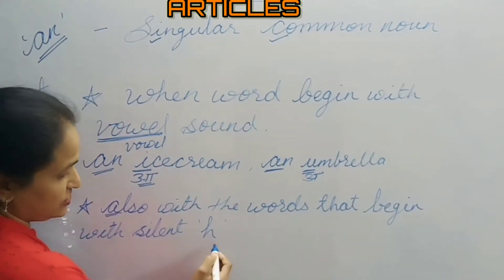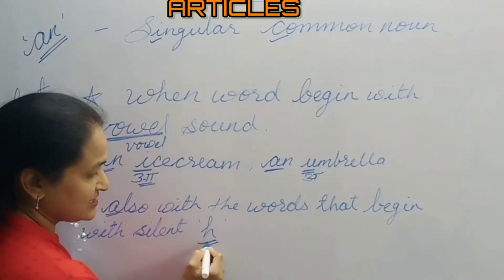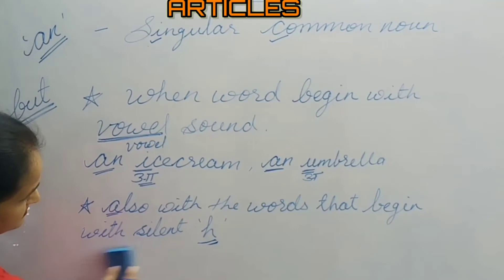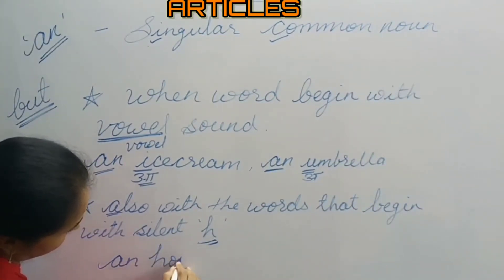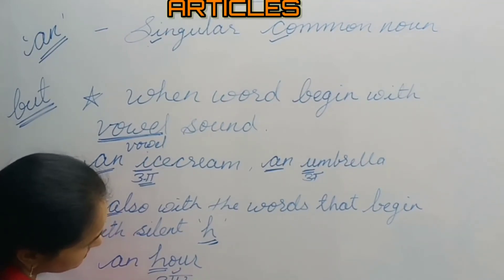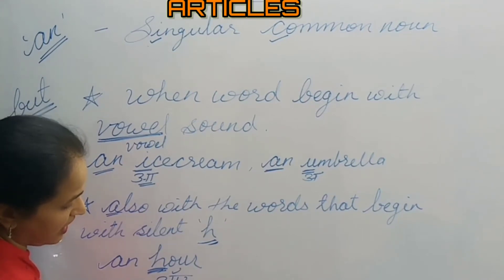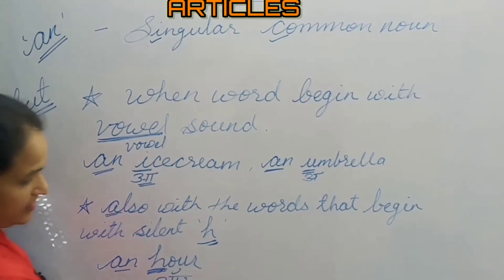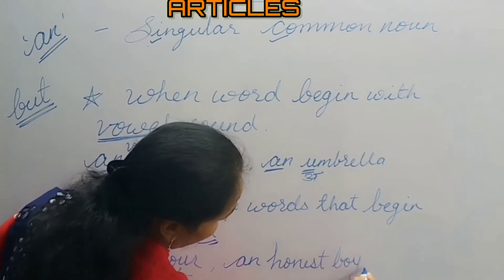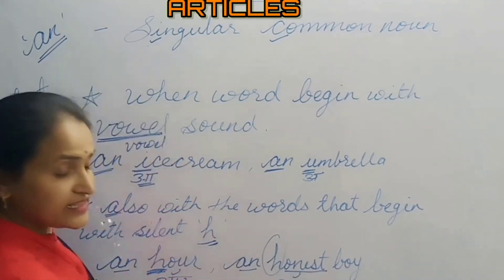Article 'an' is also used with words that begin with a silent 'h'. That means the word starts with the letter 'h', but in the word, this 'h' is silent. For example, 'an hour' — the pronunciation is 'our', and though the word has 'h', it is silent. So before this word we use article 'an'.